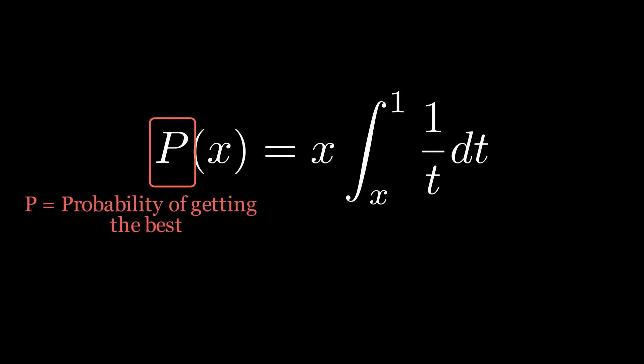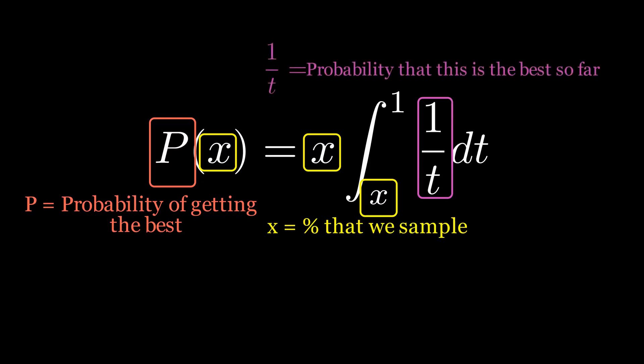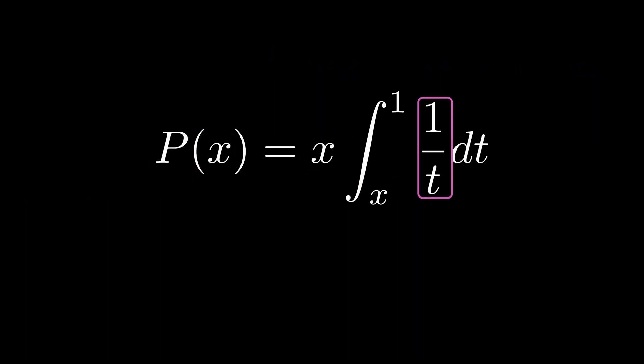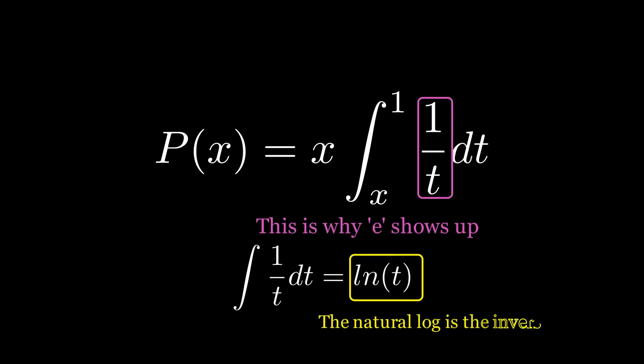Your probability of selecting the best result is x multiplied by the integral between x and 1 of 1 over t dt. In this equation, x is the percentage of the available samples we look at before trying to select the best one. The best way to think about the 1 over t dt term is that this captures the probability of any given sample being the best of all samples seen so far. The tenth sample has a 1 in 10 chance of being the best so far. This is important because we will only ever select a sample that is the best we have seen so far. And the answer to the question of why does e appear in this problem is the 1 over t term. The integral of 1 over t is the natural logarithm of t. And of course, the natural logarithm and e are inverse functions of each other.